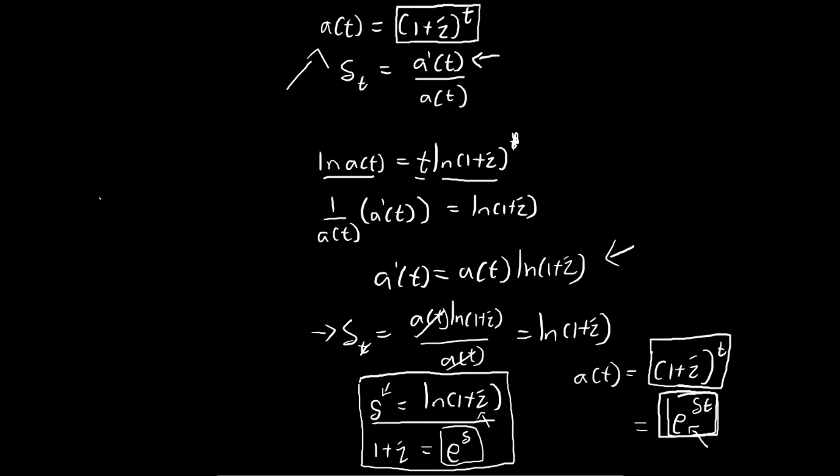This is actually a very important result. The key takeaway from this lesson is just remember that the accumulation function for compound interest can be written as this. And remember that 1 plus i is equal to e to the power of delta. This is the key takeaway of this lesson.